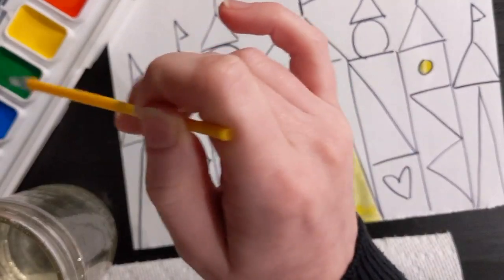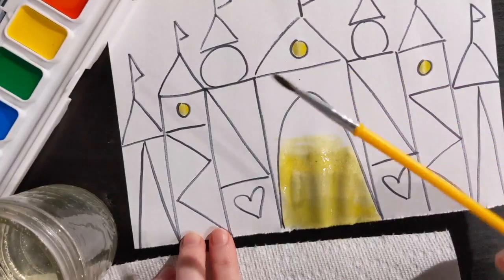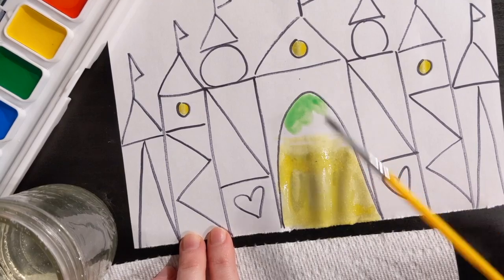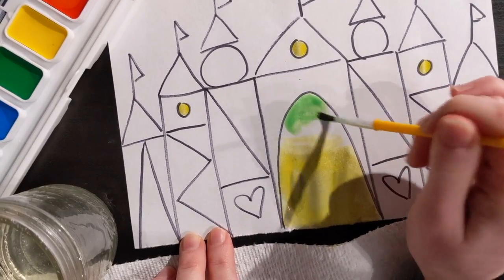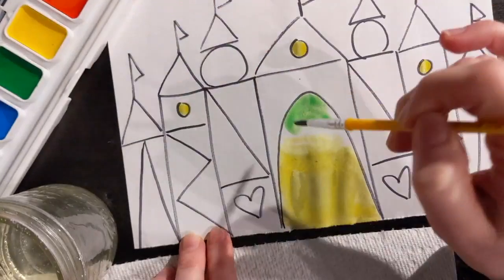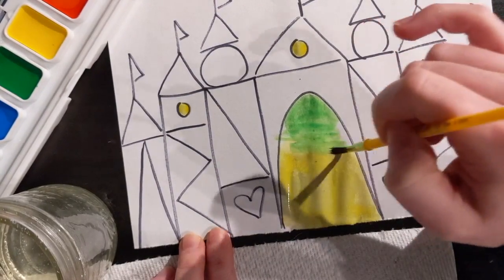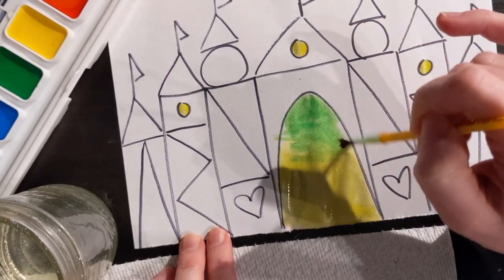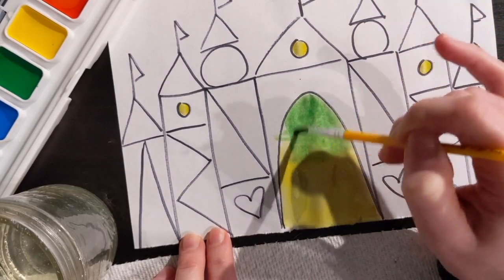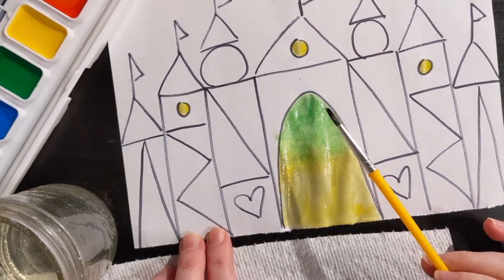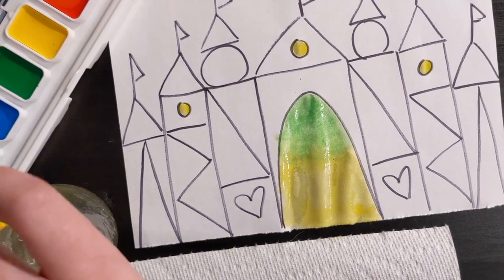Get some water and I'm gonna go into this green right here. And then I am going to start on the top and then I'm gonna bring my green down to blend with my yellow. I'm gonna blend them so that way it goes from green to yellow and it looks kind of cool.